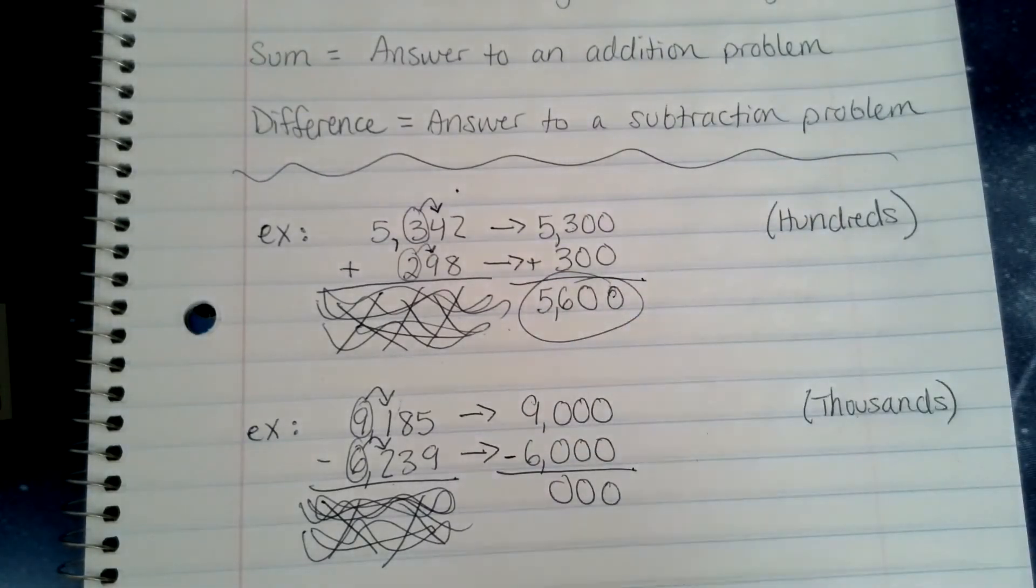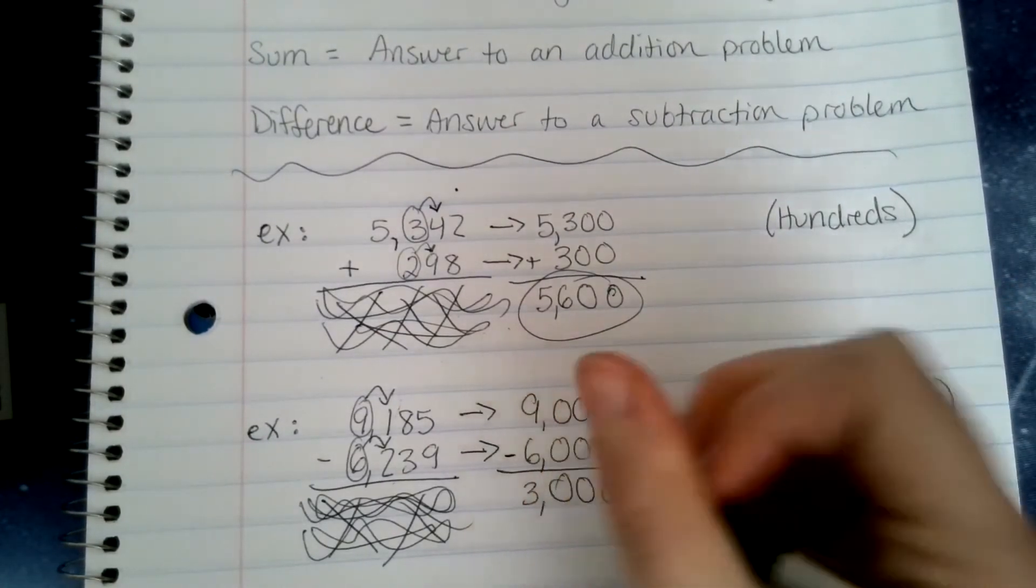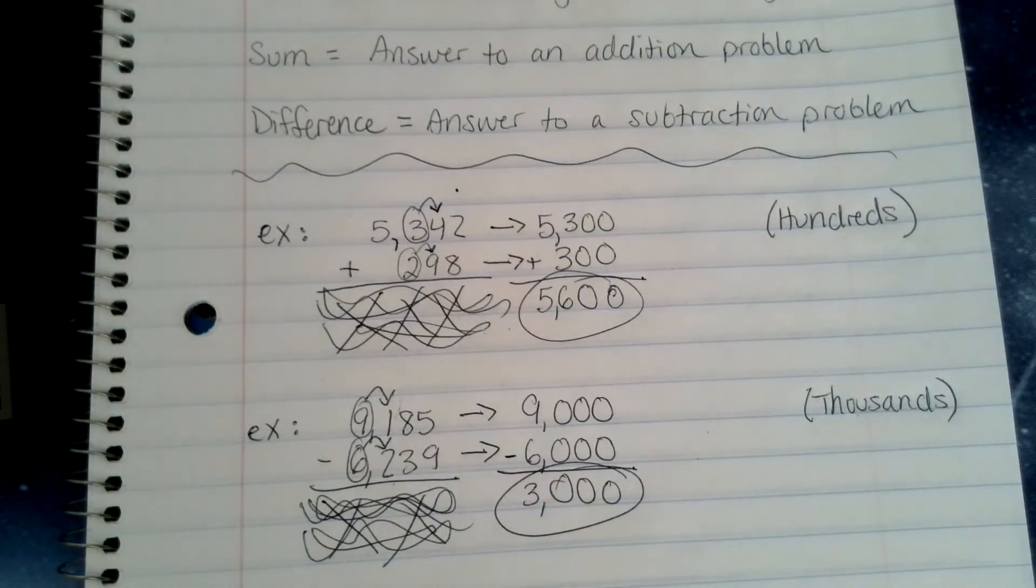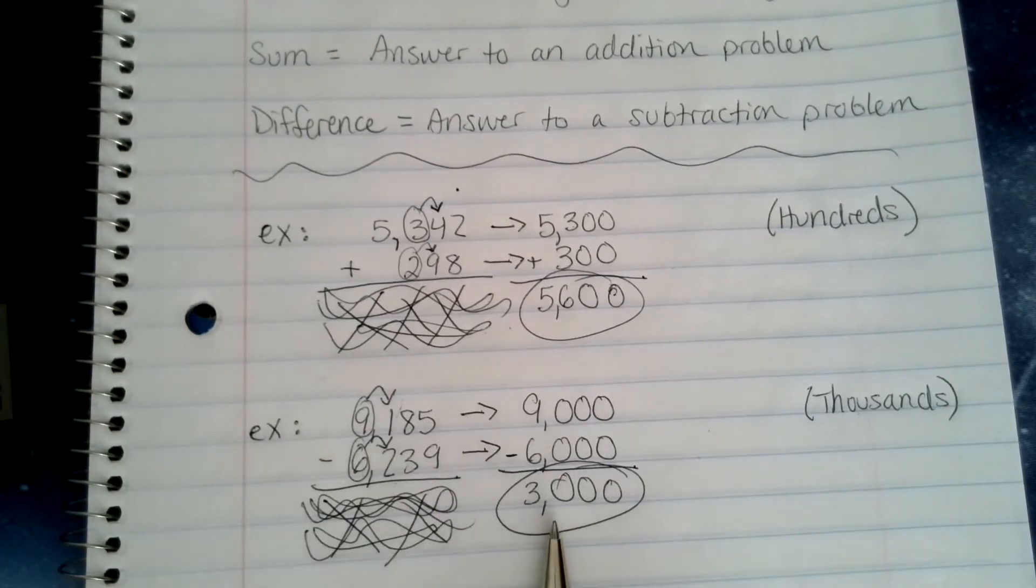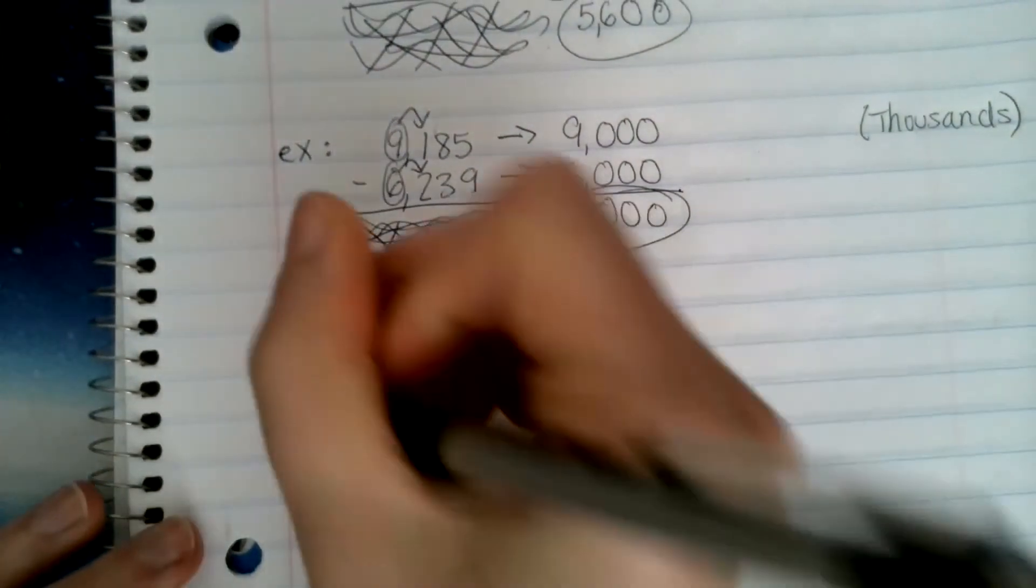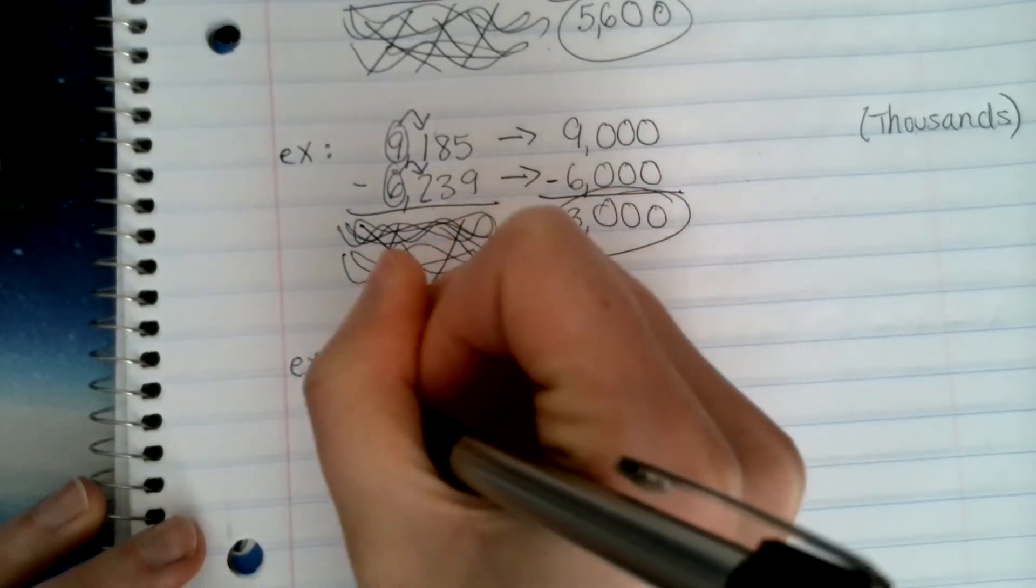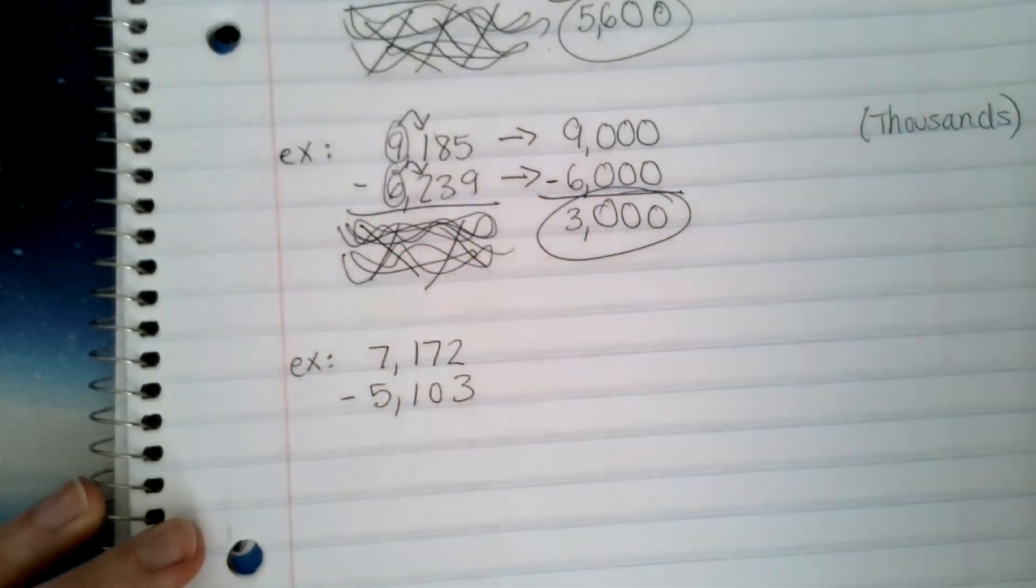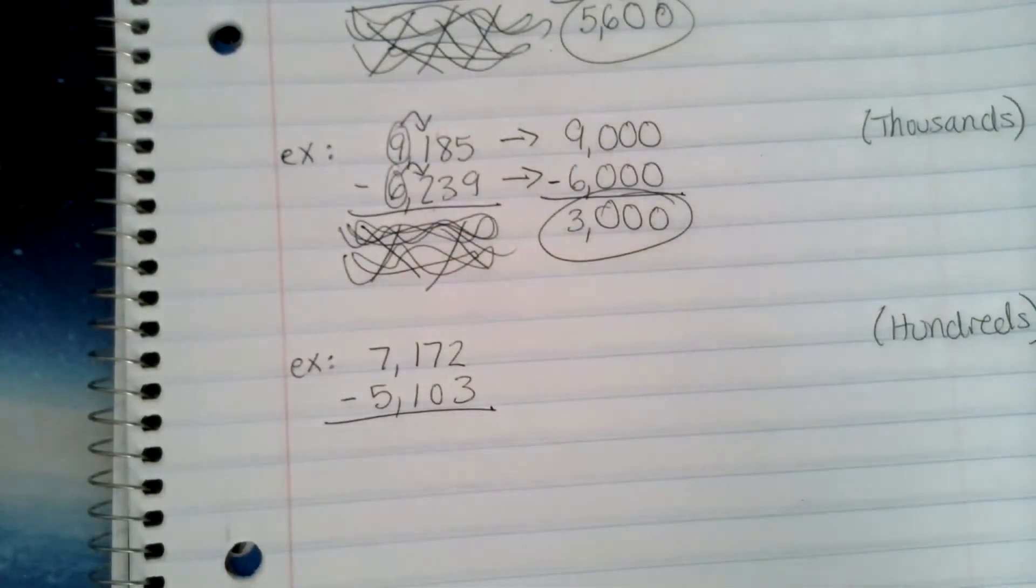Now when I subtract, again, it's super easy for the first few digits there because they're all zeros. All I have to do is nine minus six and that's three. So my final answer here is three thousand. So if you were to go through and actually solve this problem, it would come out to a number that's very, very close to three thousand. So this is a very good educated guess. Let's just do one more example so we kind of get the hang of it. Let's do seven thousand one hundred seventy two minus five thousand one hundred three. We're going to round to the hundreds place this time.